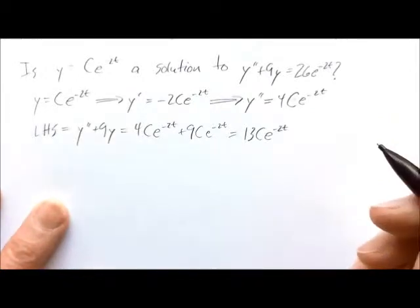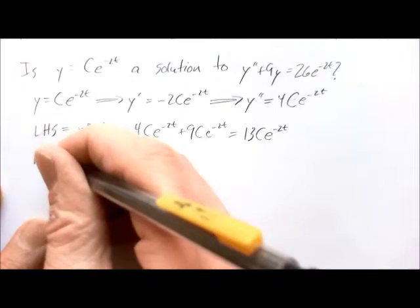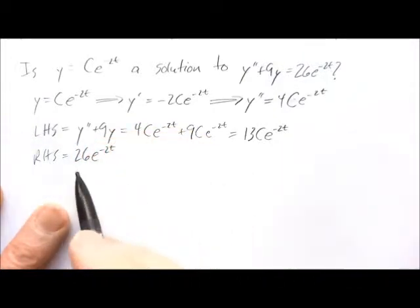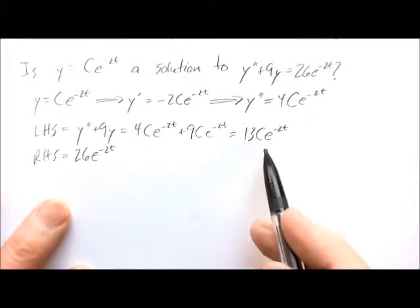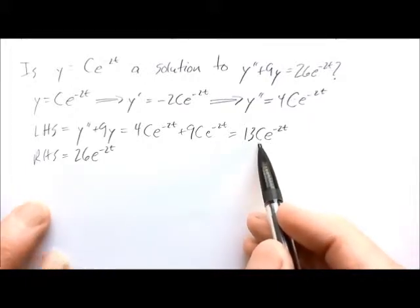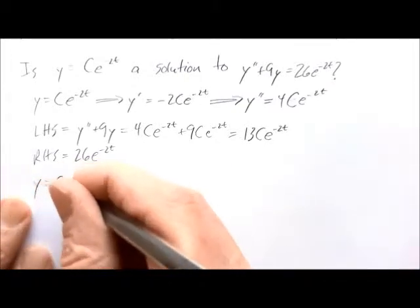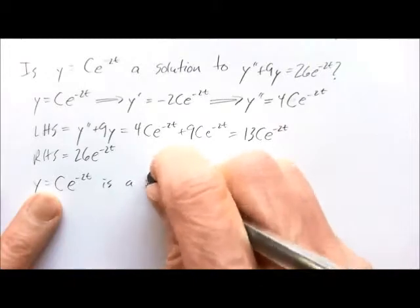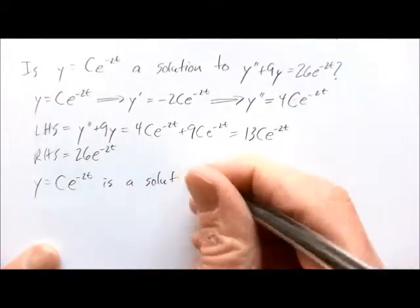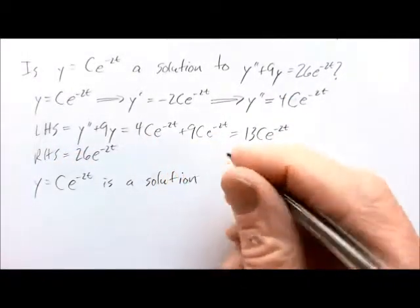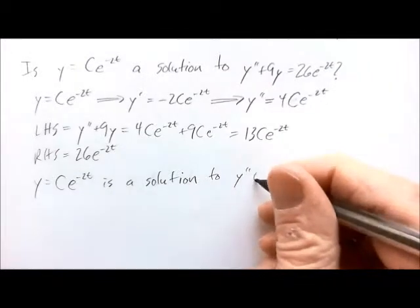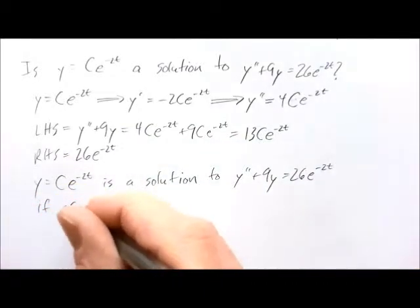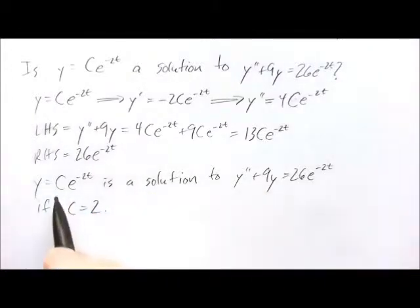The question is whether 13c e to the minus 2t equals the right-hand side, which is 26e to the minus 2t. These two are equal only if c equals 2. So y equals c e to the minus 2t is a solution to y double prime plus 9y equals 26e to the minus 2t only if c equals 2 — that's the only value for which it works.